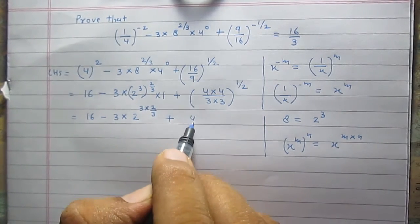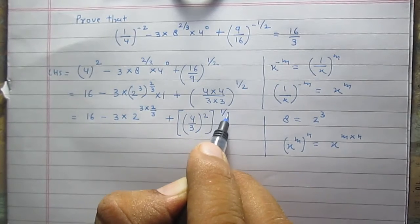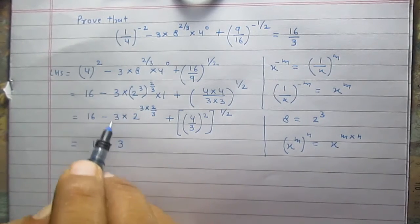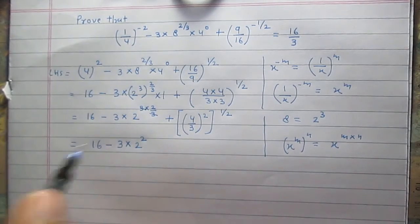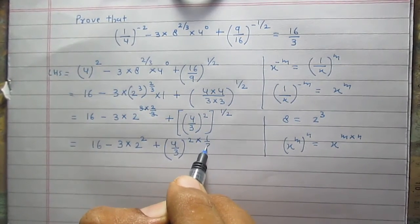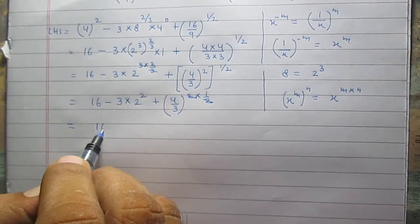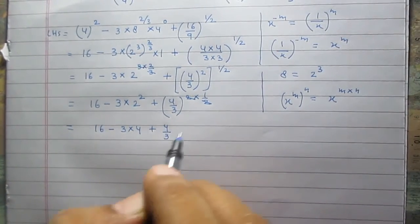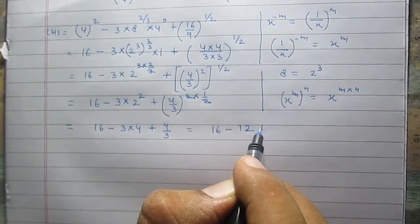Now it becomes (4/3) whole squared, raised to the power 1/2. Applying the power rule, the exponents 2 multiplied by 1/2 give 1, so the result is simply 4/3. The full expression is now 16 minus 3 multiplied by 4, plus 4/3. That gives 16 minus 12, plus 4/3.